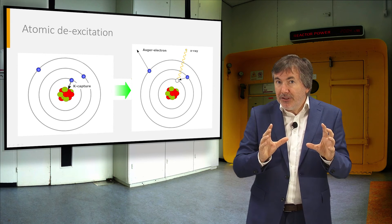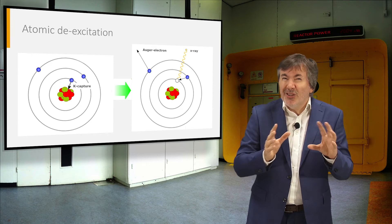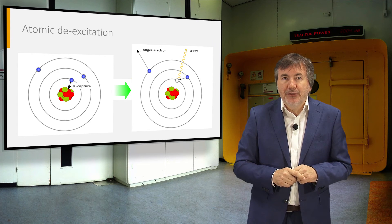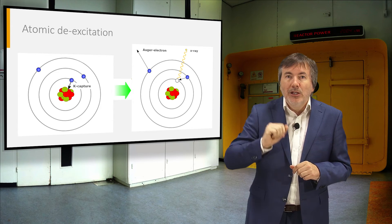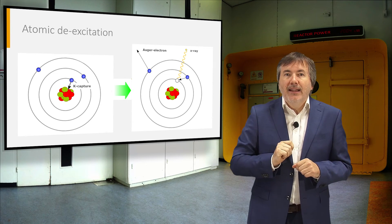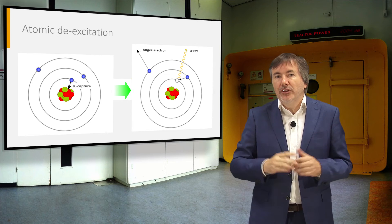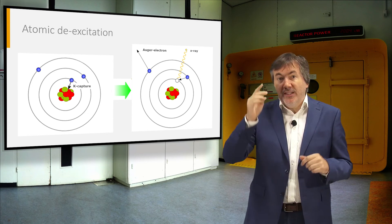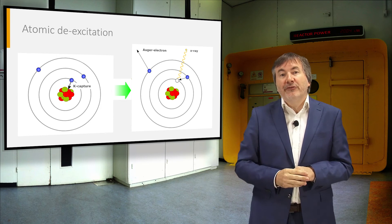After electron-capture, the atom has some rearranging to do. If a K-shell electron has been captured, an electron of a higher shell will take its place, and an X-ray is emitted or an Auger electron. This results in one or two gaps in higher shells, which in turn have to be filled.